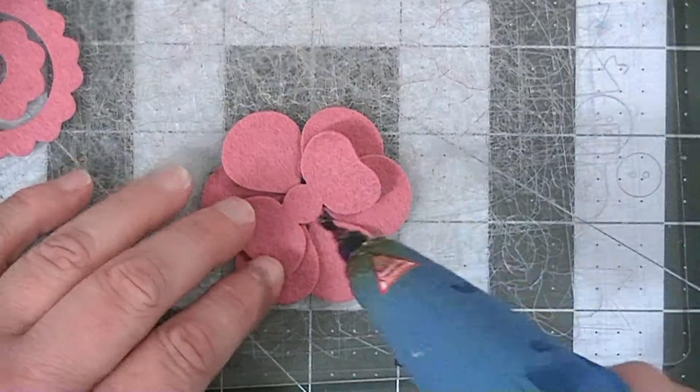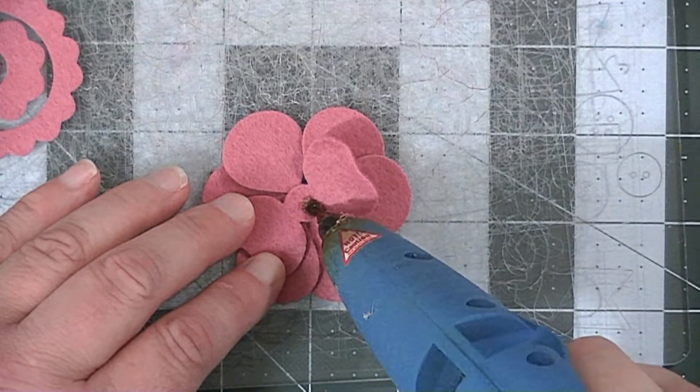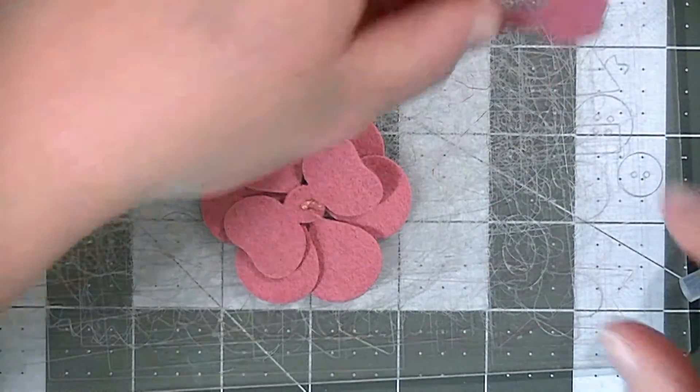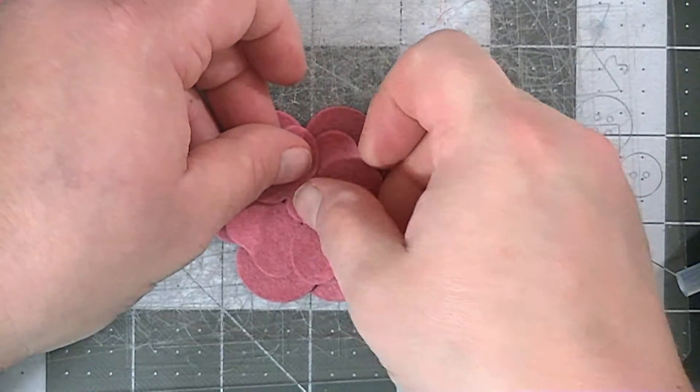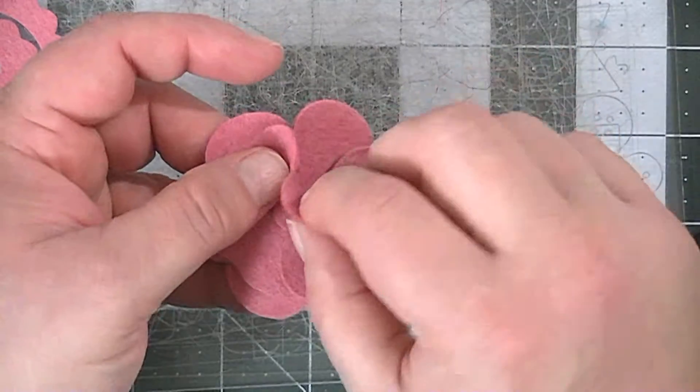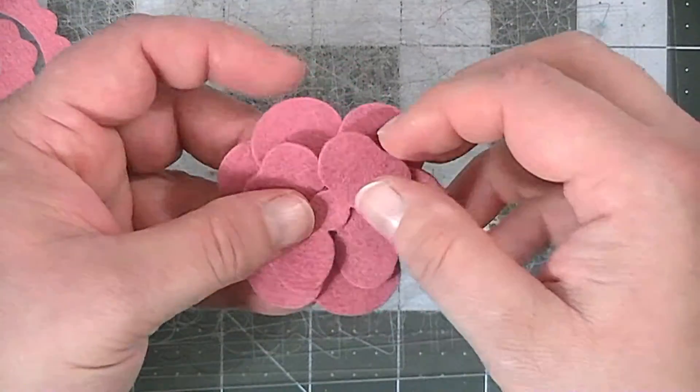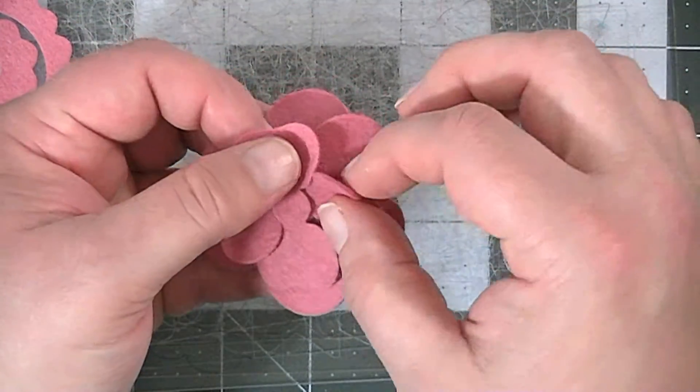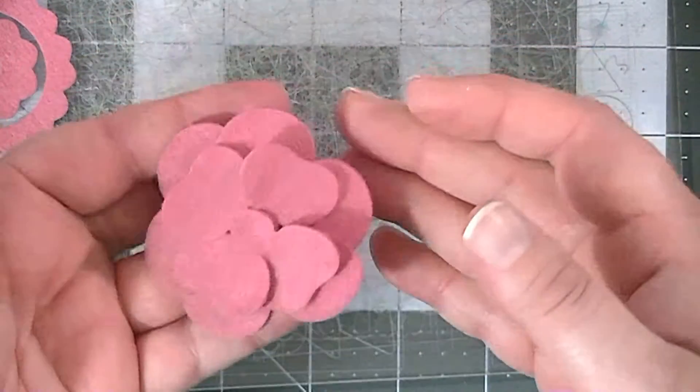Then put another little bit of glue, and you're going to glue this one the opposite way. Then you're going to do the same thing—pop the petals like that. So now you've got a flower that looks like this.